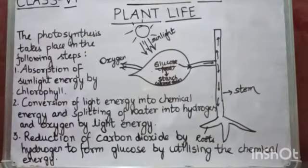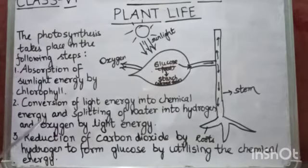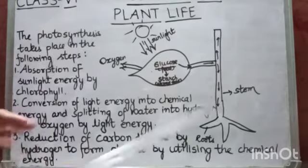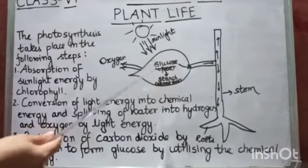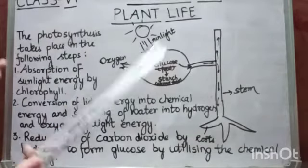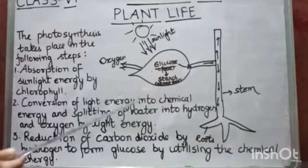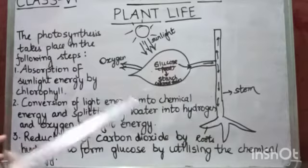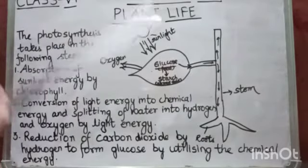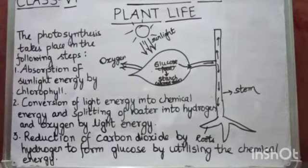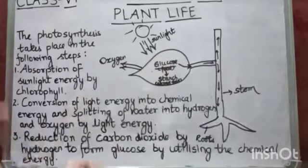Now, the photosynthesis takes place in the following steps. So what are these steps? The first one is absorption of sunlight energy by chlorophyll. So just now I told you that chlorophyll are the pigments that trap the sun's energy. Now the second one is conversion of light energy into chemical energy. That means during the process of photosynthesis, light energy is converted into chemical energy. How? Light energy from the sun, during the process, during the photosynthesis, the glucose is prepared, which is food for the plant. And this glucose, glucose and starch, are basically carbohydrates. And carbohydrates contain chemical energy stored in them. So this is how light energy is converted into chemical energy.